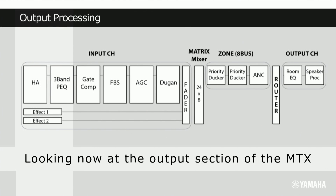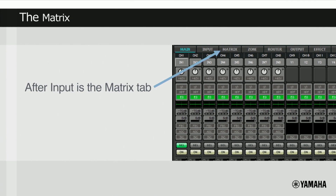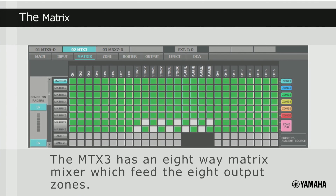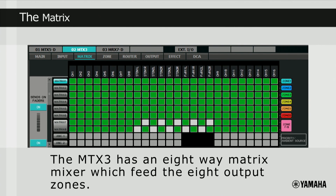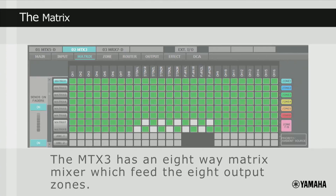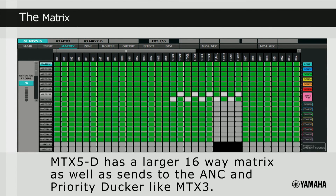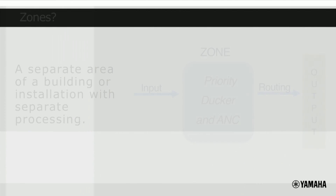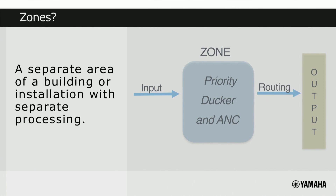Having covered the input processing, now let's take a look at the output side of the MTX series. Clicking the Matrix tab, we can see that the MTX3 has an 8-way matrix mixer which feeds the 8 output zones, while the MTX5D has a larger 16-way matrix for sends to up to 16 zones, as well as sends to the ambient noise compensator and priority ducker. A zone is a separate area of a building or installation where processing unique to that area can be applied before the audio is routed to an output.